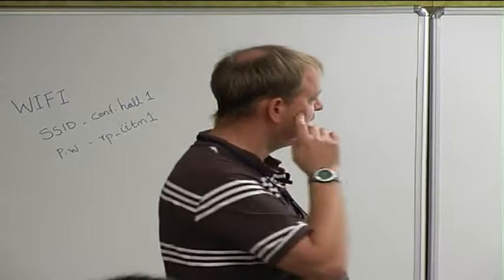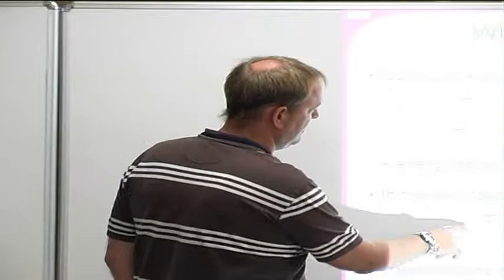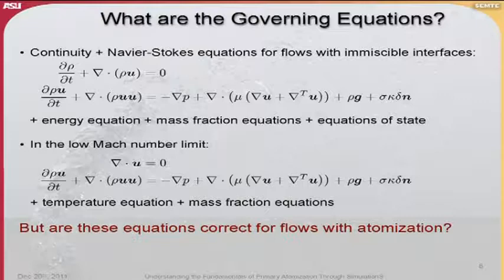We can look at this in the low Mach number limit, which introduces the assumption that the flow is in that regime. Then we have the divergence-free constraint on the velocity, and the Navier-Stokes momentum equation is basically unchanged, plus a temperature equation and mass fraction equations. In the low Mach number incompressible limit, the density and pressure decouple and density becomes a function of the phase interface.